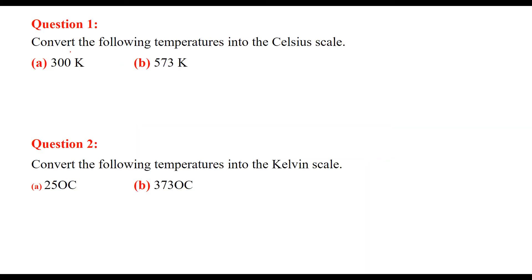We are solving question answers on Matter in Our Surroundings. Question 1: Convert these temperatures into Celsius scale. To convert Kelvin to Celsius, we subtract 273 from the numbers. So 300 minus 273 is 27 degrees Celsius, and 573 minus 273 is 300 degrees Celsius.